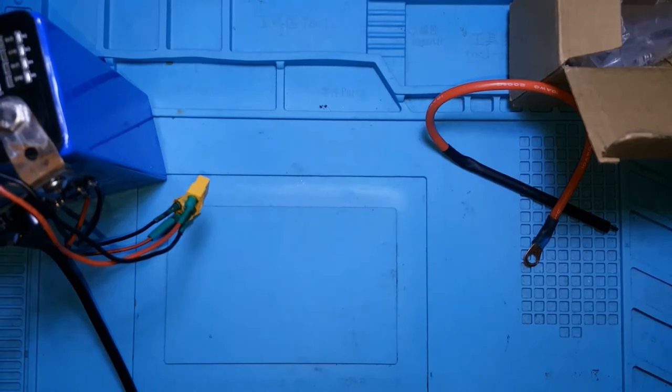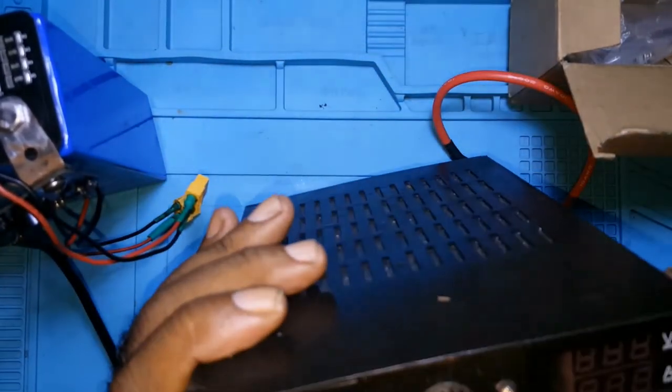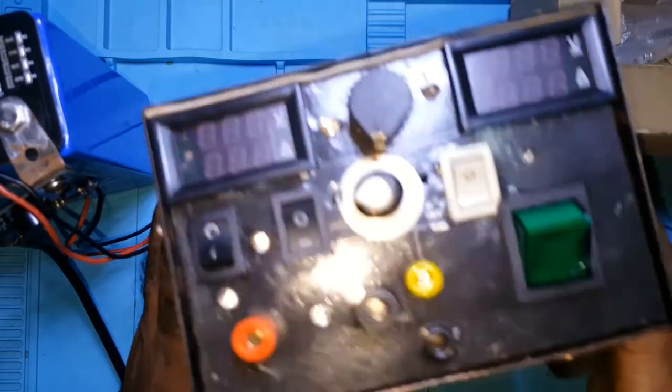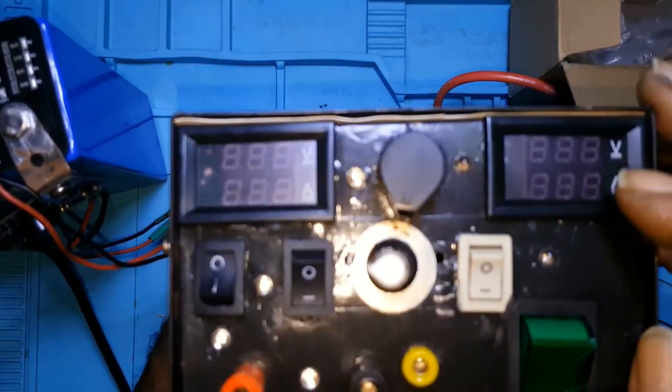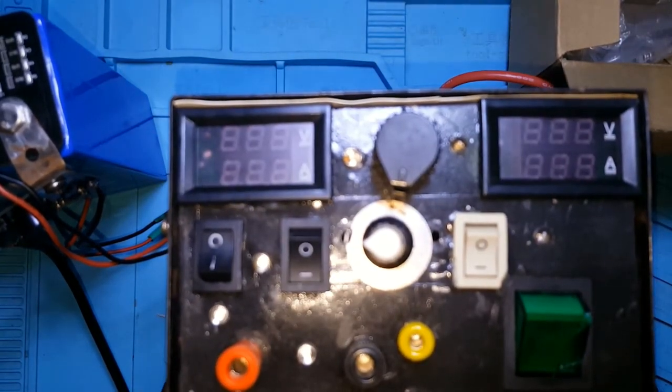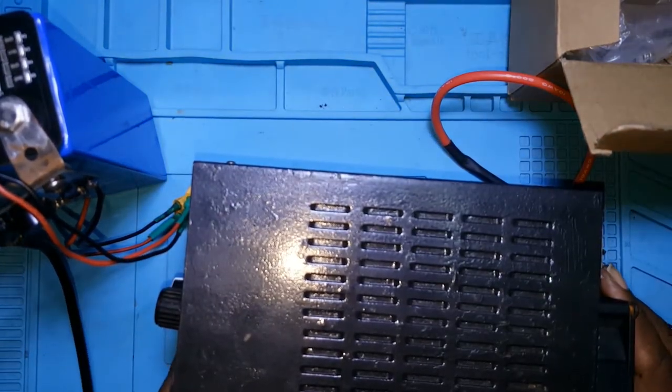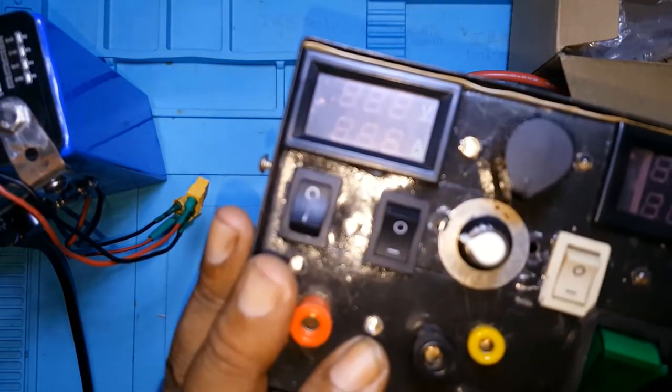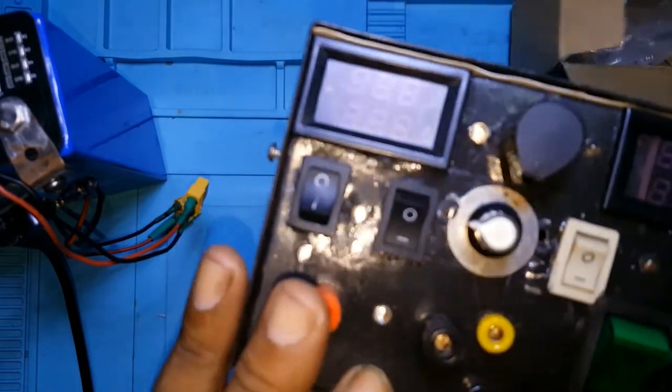Then I took my homemade power supply and I adjusted this to 2.8 volts and watched the amperage. It had nothing on the amperage, but the volts had 2.7. I monitored it for a while.